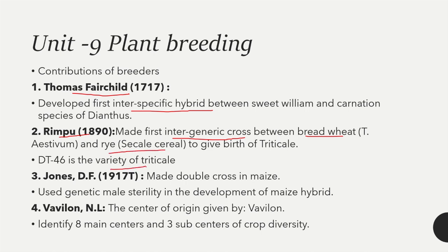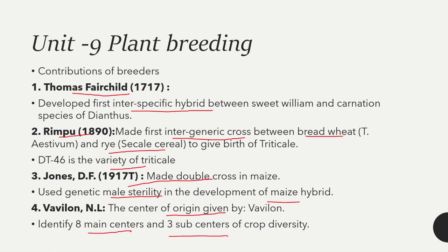Jones made a double cross in maize and used genetic male sterility in the development of maize hybrids. Vavilov gave the concept of centers of origin and identified eight main centers and three sub-centers of crop diversity.